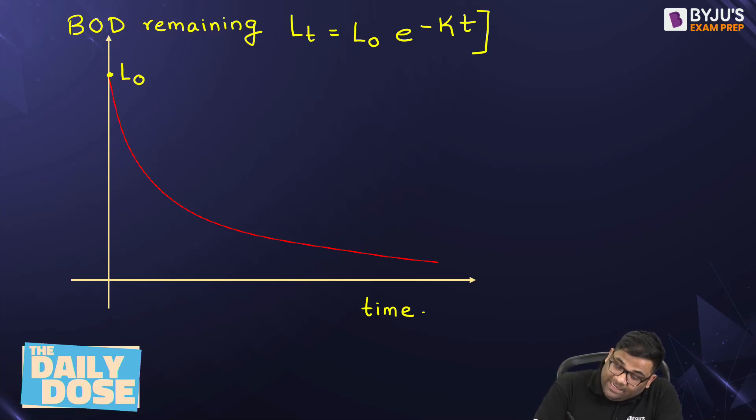So the BOD remaining is this expression. Now what will be the BOD consumed? The BOD consumed will be the ultimate or the initial one minus the BOD remaining at time t.